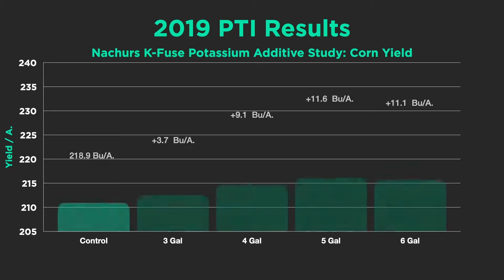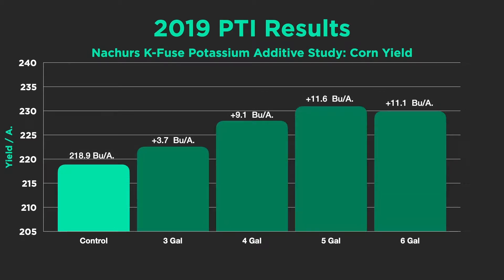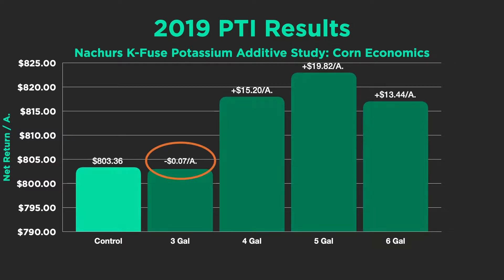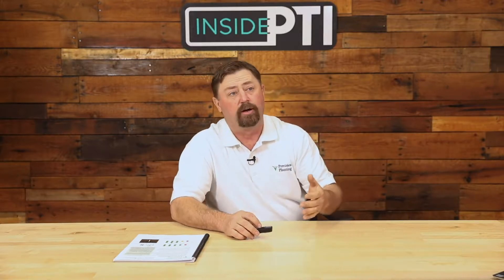Here are 2019 results from the PTI farm using K-Fuse applied at three, four, five, and six gallons per acre. Three gallons probably wasn't enough, but once we ramped up to four, five, and six gallons, we're seeing nine to eleven bushel responses. Looking at net return after cost of the K-Fuse product, at four, five, and six gallons we're seeing almost twenty dollars net return per acre.